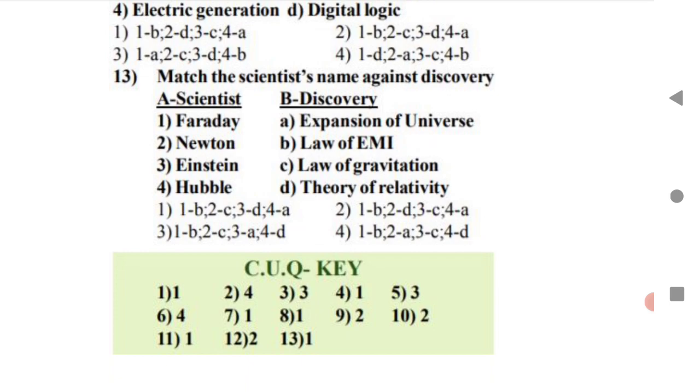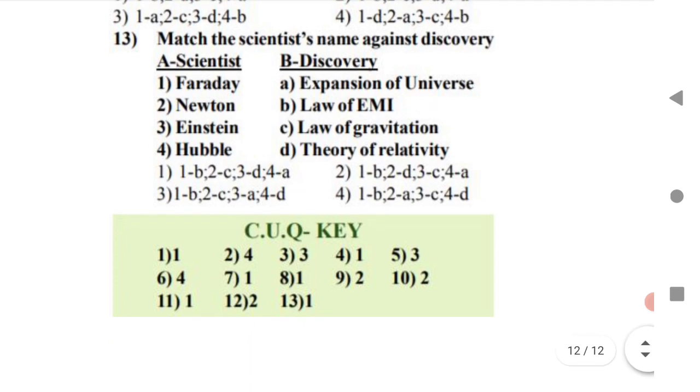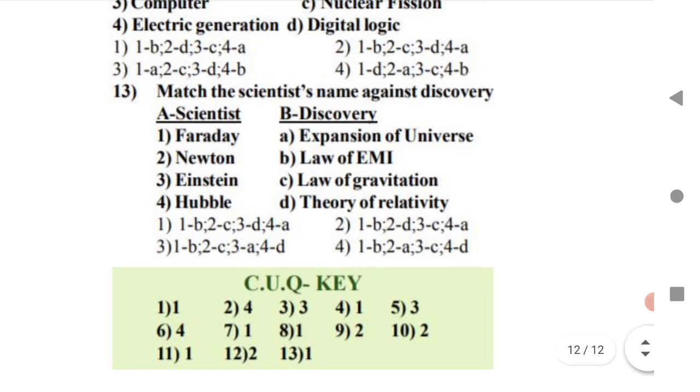There is a very important question given. Sometimes they may ask you what is the discoveries of Einstein. Option three is D, that is theory of relativity. Hubble is a telescope. You know that Hubble, you might have heard about the telescope. Expansion of universe. This is about Hubble. This is 13 MCQs.